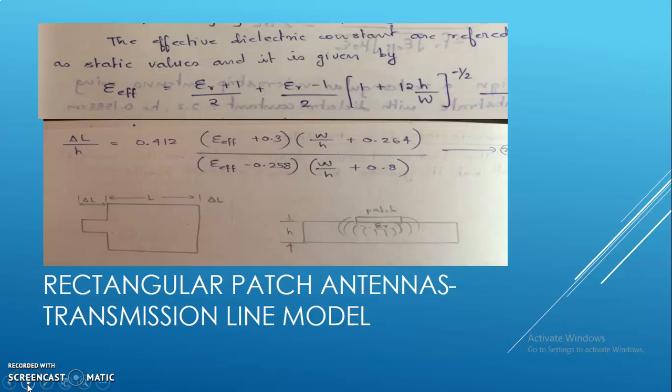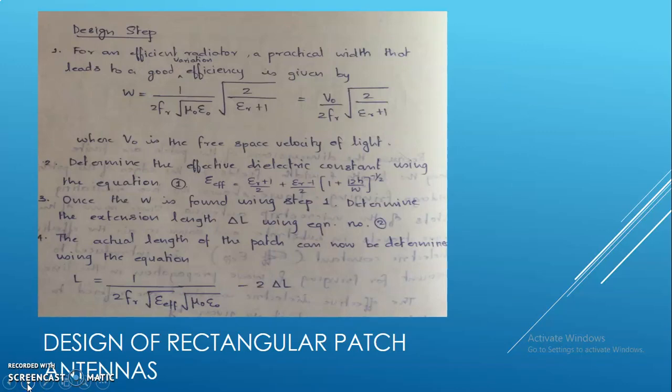Following are the steps involved in the design of a rectangular patch antenna. The first step: for an efficient radiator, a practical width that leads to good radiation efficiency is given by W equals v_0 by f_r times square root of 2 by (epsilon_r plus 1), because we know that 1 by mu_0 epsilon_0 is v_0, where v_0 is the free space velocity of light.